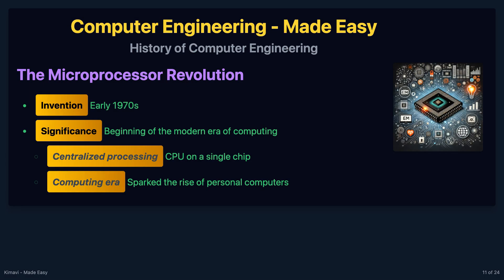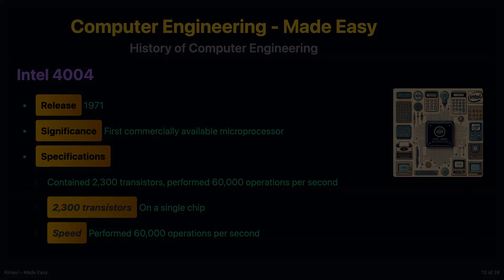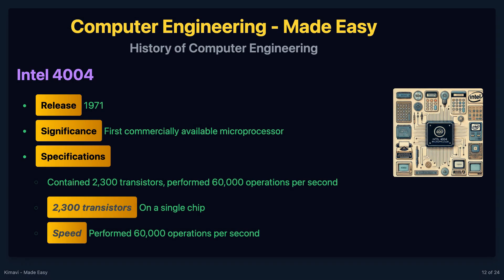The invention of the microprocessor in the early 1970s marked the beginning of the modern era of computing. The Intel 4004, released in 1971, was the first commercially available microprocessor. It contained 2,300 transistors and could perform 60,000 operations per second. The microprocessor's significance lies in its ability to integrate the CPU onto a single chip, enabling the development of personal computers.